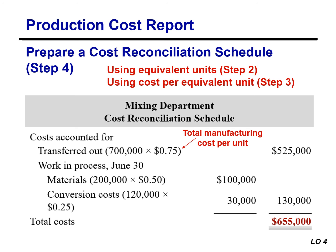For work in process, we go back to step two to obtain equivalent units for materials and conversion costs — 200,000 and 120,000 respectively — and to step three for unit material cost of $0.50 and unit conversion cost of $0.25. Multiplying 200,000 by $0.50 gives materials cost of $100,000. Multiplying 120,000 by $0.25 gives conversion cost of $30,000. Adding material and conversion costs together, work in process at June 30th is $130,000. Adding $525,000 transferred out plus $130,000 gives $655,000, confirming that total costs accounted for equal total costs to be accounted for.